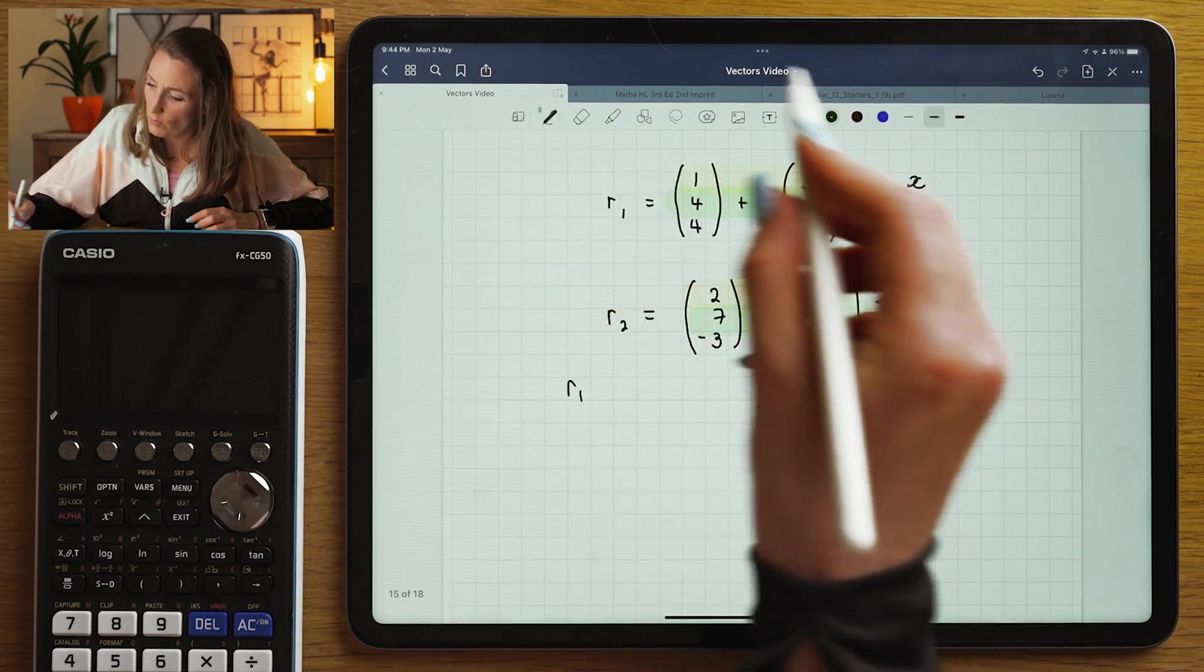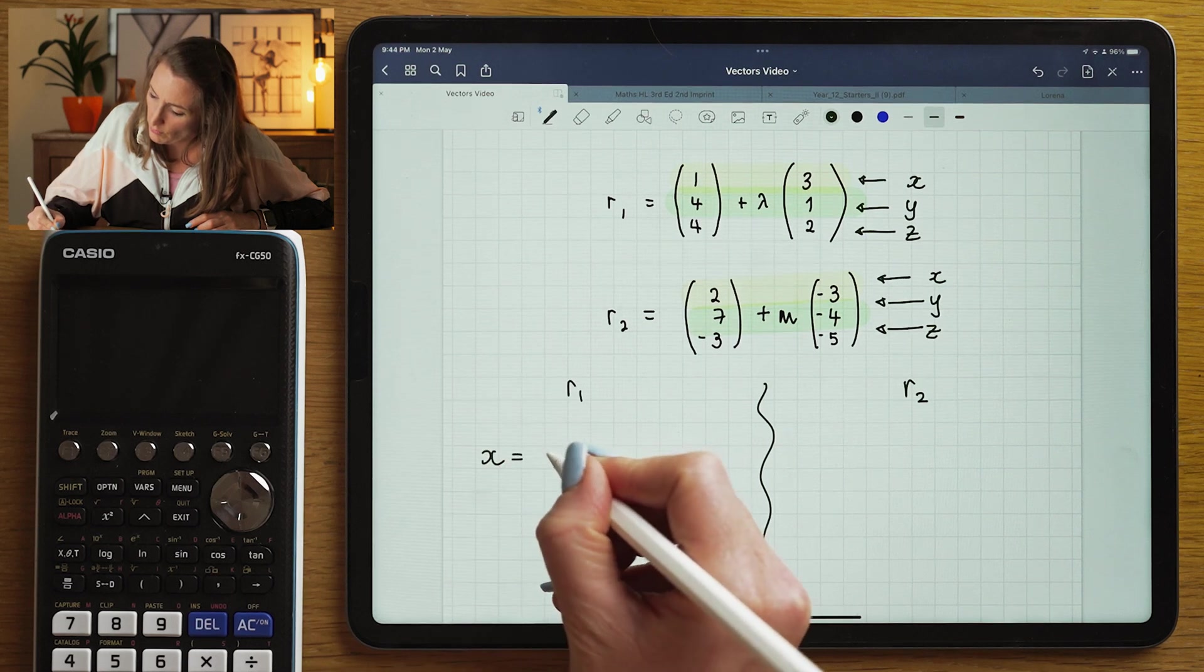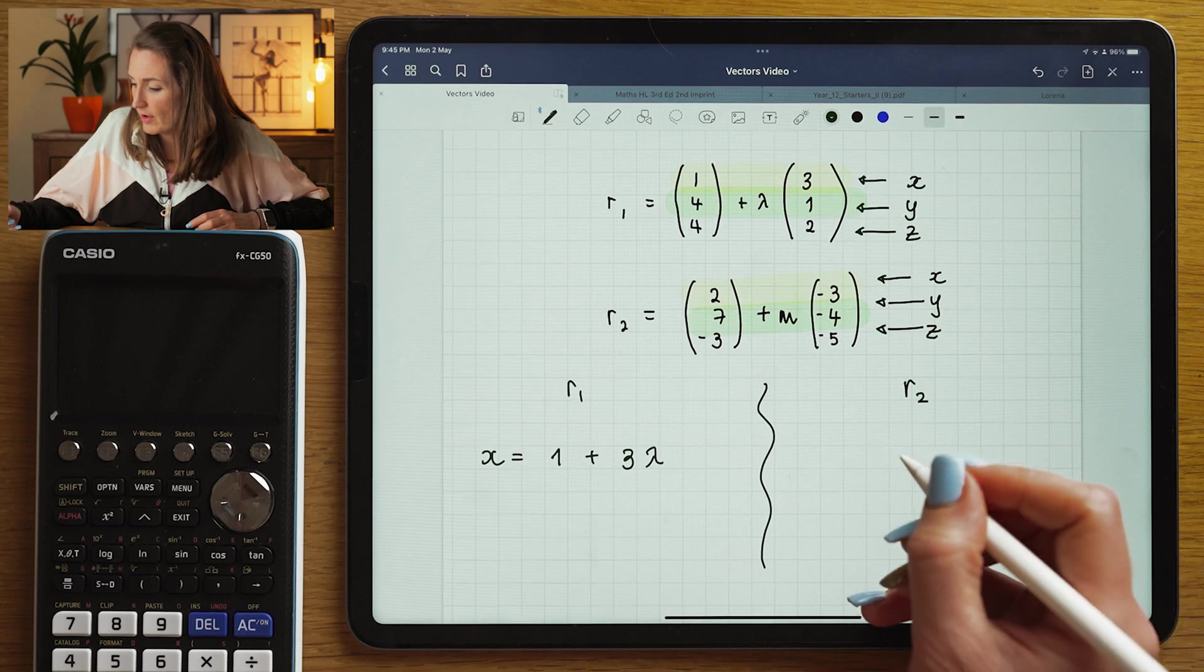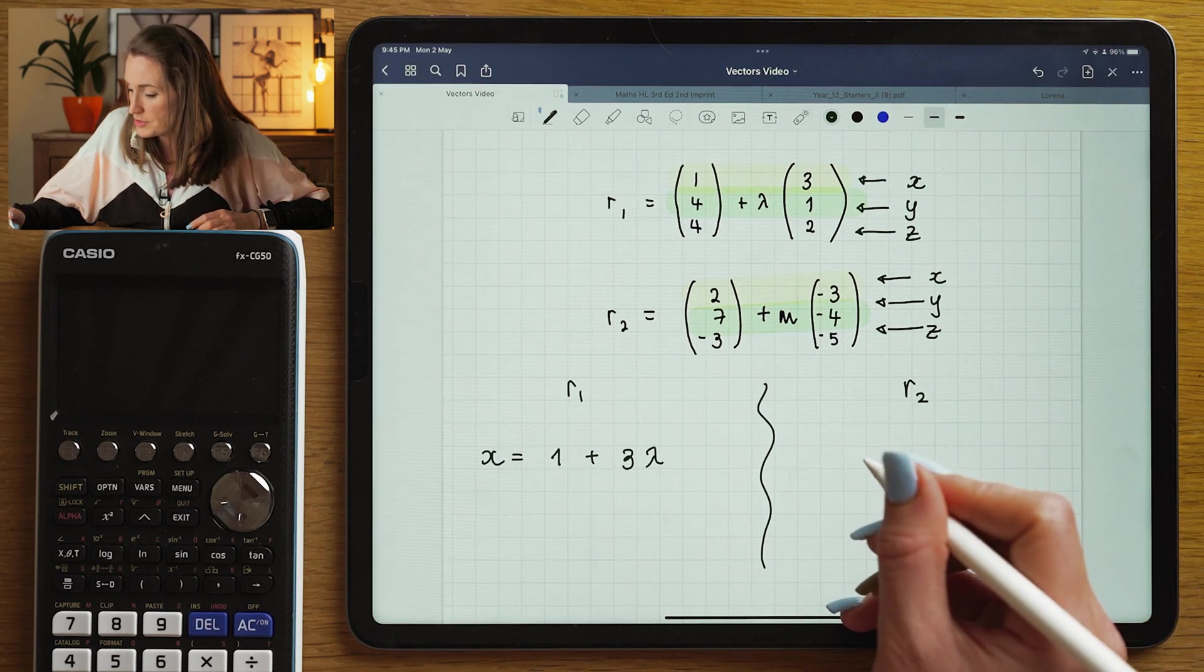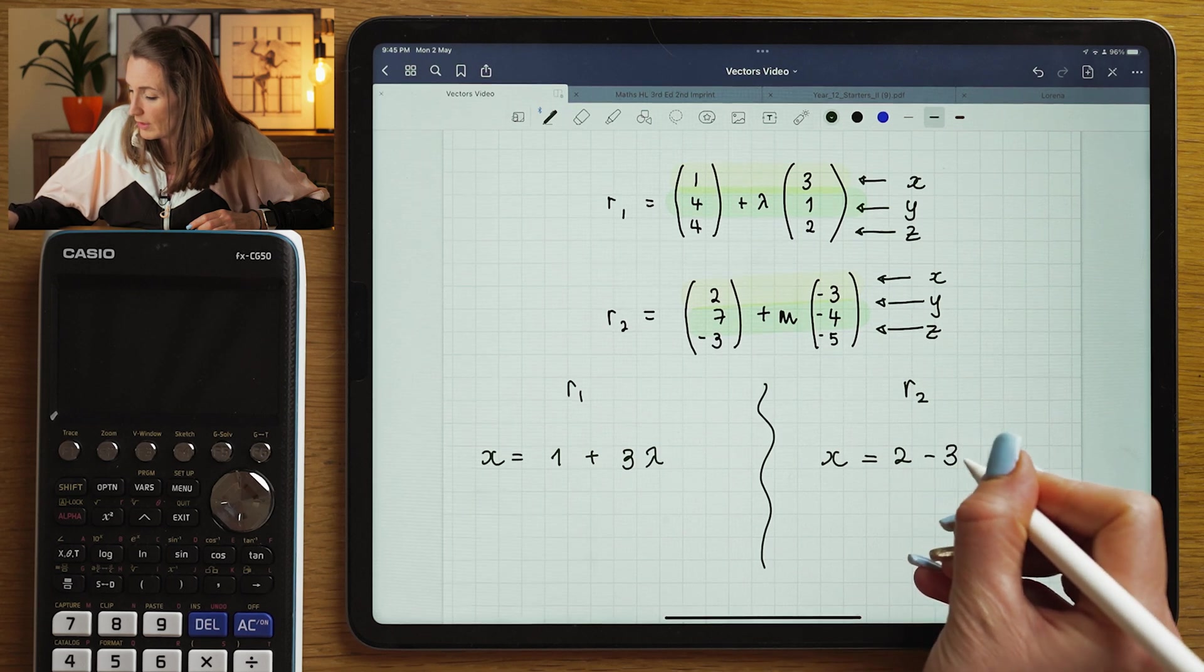So if I look at R1, the equation for the X coordinate would be 1 plus 3 lambda. If I look at R2, the equation for the X coordinate would be 2 minus 3 mu.